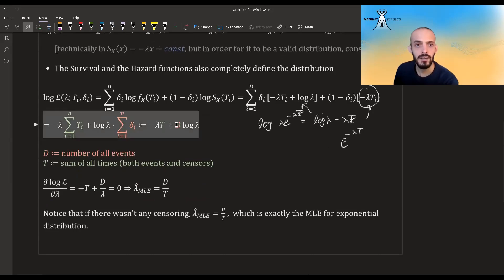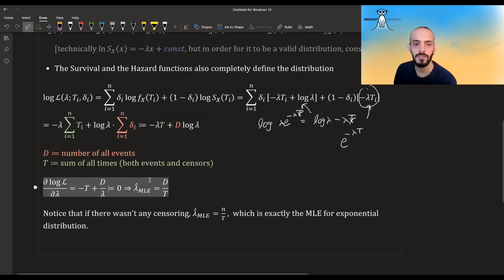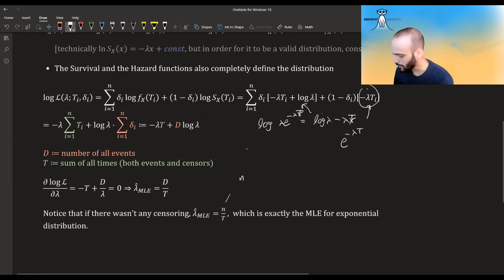So we get this expression. If we differentiate it with regards to the parameter lambda, we get this, equate to zero, and we find that the maximum likelihood estimator is just D over T - the number of events divided by the total time. Note that if we didn't have censors, then the only thing that would be different is that D would be equal to n, equal to the number of observations, and T is the sum of all times. If we don't have censoring it's just the time of all events, so basically we get n over sum of xi, which is 1 over x-bar, and this is exactly the maximum likelihood estimator for exponential distribution.